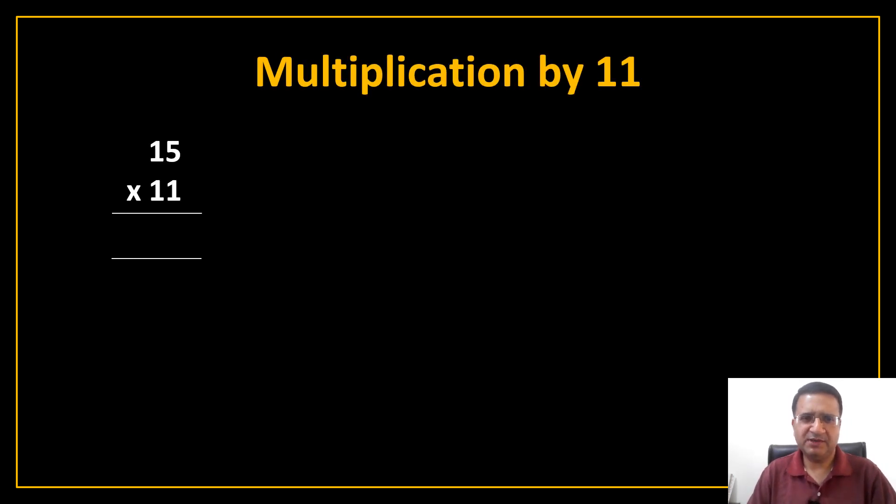We will take a very simple example: 15 multiply by 11. Now see here, 15 has 2 numbers. What are those 2 numbers? 1 and 5. So what do you have to do? Very simple. Just write 1 here and 5 here. Now leave some space blank in the middle.